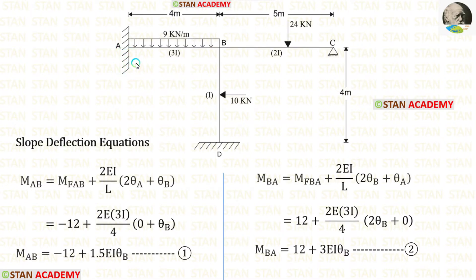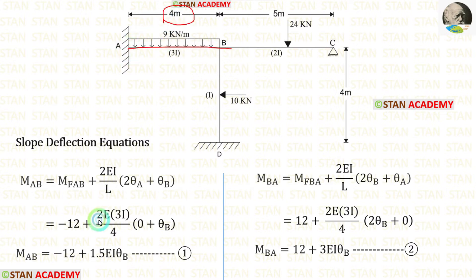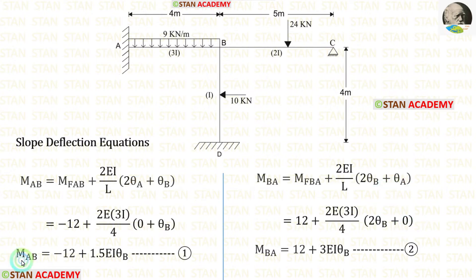Now let us make the slope deflection equations in span AB. Let us apply the fixed end moments. The moment of inertia for span AB is 3i, so instead of I we apply 3i. The length of AB is 4 meters. At point A there is a fixed support, so there will be no slope — theta A equals zero. We make two equations for span AB.